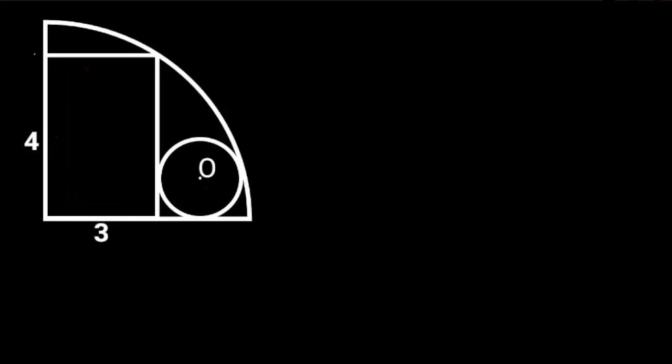In this figure, a rectangle and a circle are inscribed in a quarter circle. If the sides of the rectangle are 3 and 4 units respectively, find the radius of the circle.